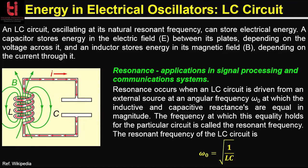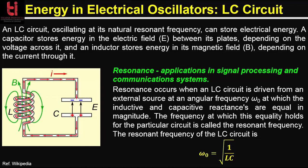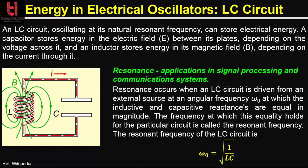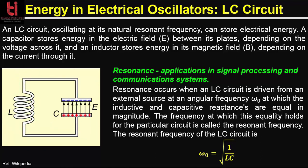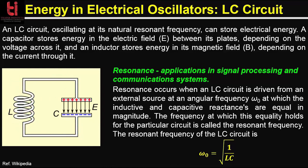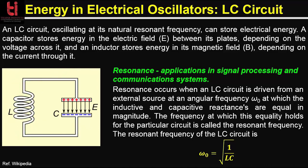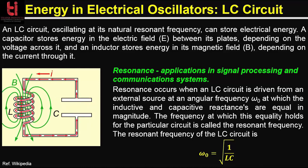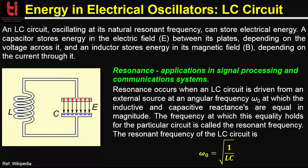The voltage across the capacitor falls to zero as the charge is used up by the current flow. The energy stored in the coil's magnetic field induces a voltage across the coil. This induced voltage causes a current to begin to recharge the capacitor with a voltage of opposite polarity to its original charge. Due to Faraday's law, the EMF which drives the current is caused by a decrease in the magnetic field, so the energy required to charge the capacitor is extracted from the magnetic field. When the magnetic field is completely dissipated the current stops, the charge is stored in the capacitor again with opposite polarity, and the cycle begins again with current flowing in the opposite direction. The energy oscillates back and forth between the capacitor and the inductor until internal resistance makes the oscillations die out.